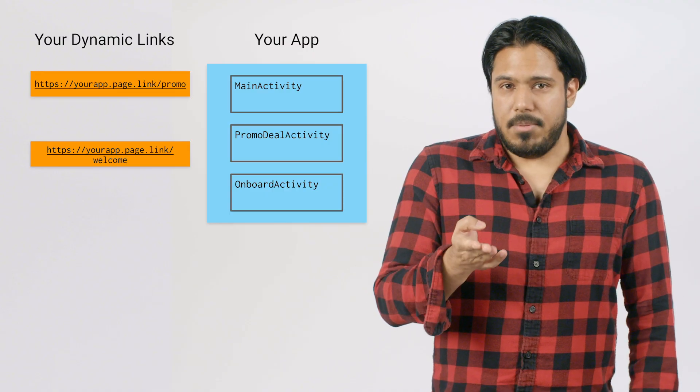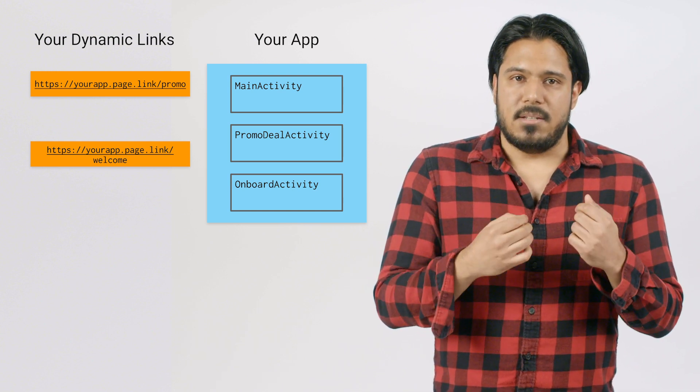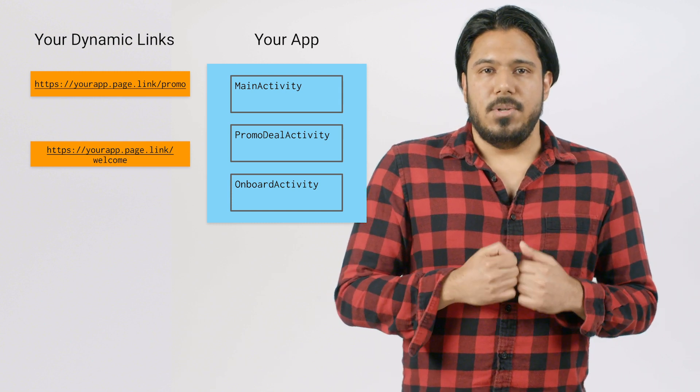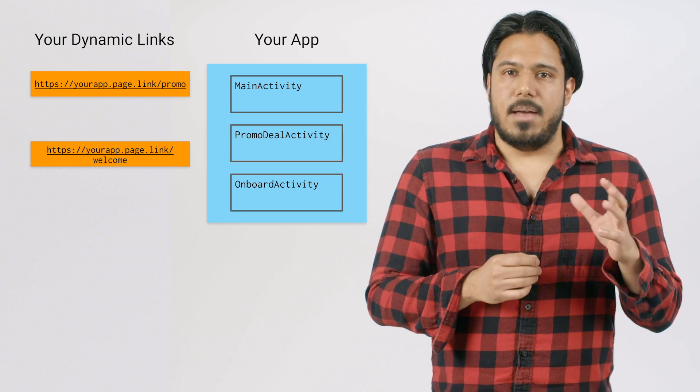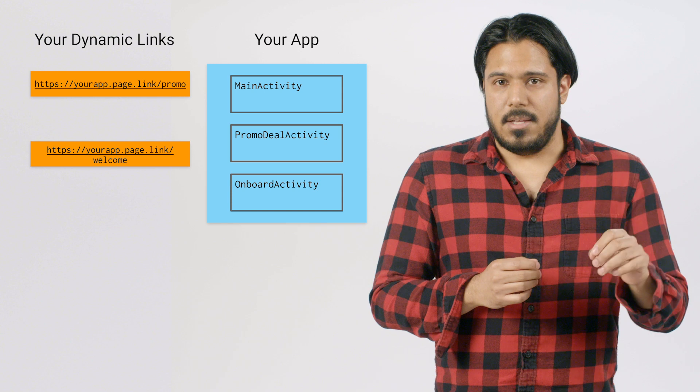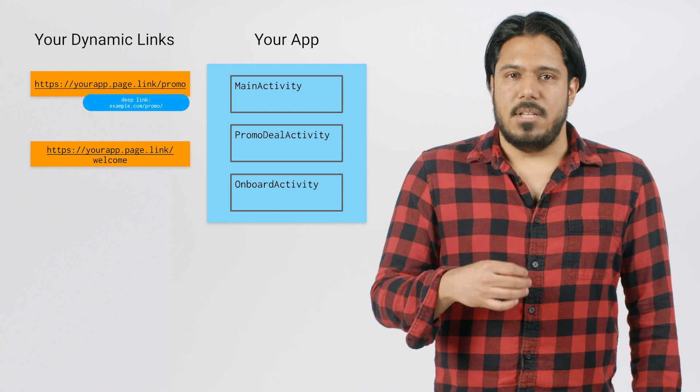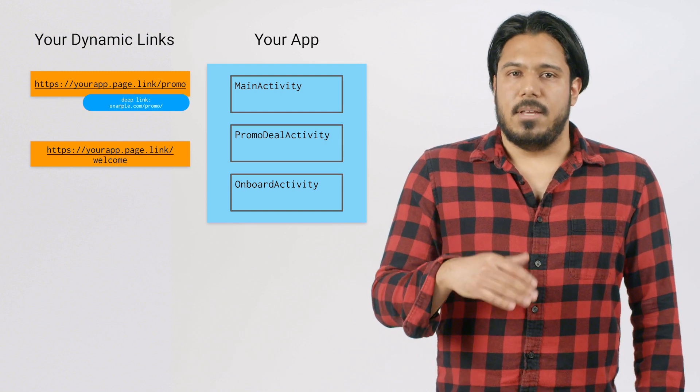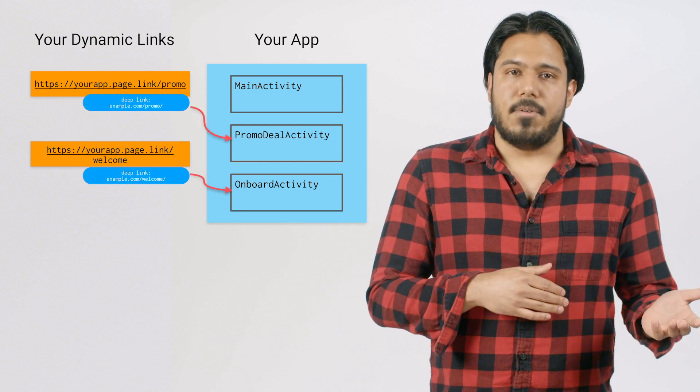In this case, I want this to handle any URLs that have a host of example.com. And just to be safe, I'll make sure it can handle both the HTTP and HTTPS schemes. OK. So with this set, my app is now configured to handle all dynamic links with a deep link parameter set with the example.com domain, which is perfect for my example. In your own app, though, you'll want to set up intent filters with different host URL patterns for each activity where it makes sense to receive a dynamic link.